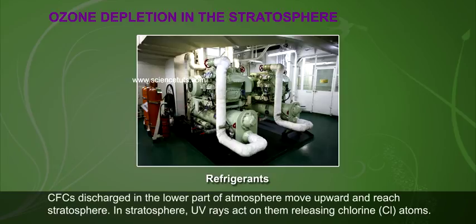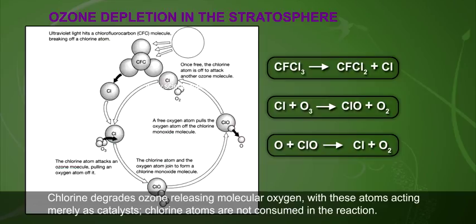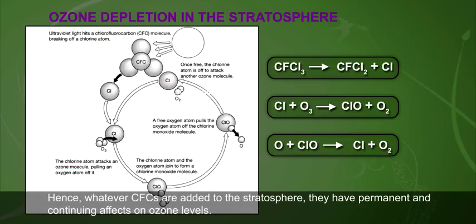CFCs discharged in the lower atmosphere move upward and reach the stratosphere. In the stratosphere, UV rays act on them releasing chlorine atoms. Chlorine degrades ozone, releasing molecular oxygen, with these atoms acting merely as catalysts — chlorine atoms are not consumed in the reaction. Hence, whatever CFCs are added to the stratosphere, they have permanent and continuing effects on ozone levels.